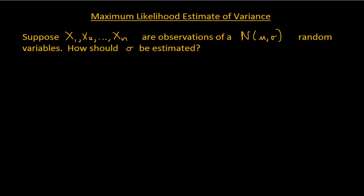In this video we're going to discuss the estimation of variance. This is going to be very similar to the derivation of least squares, except we're looking for the other thing. When we derived least squares, we supposed that we had some observations of a normal random variable and then we estimated the mean. Now here we suppose that we have a bunch of observations of a normal random variable and this time we're going to estimate the standard deviation.